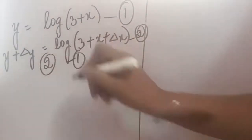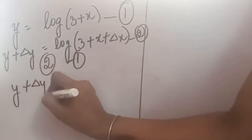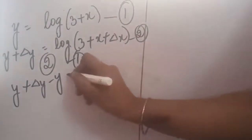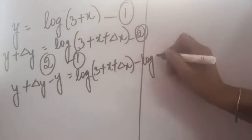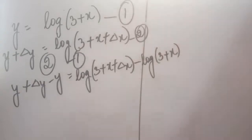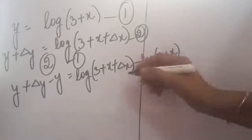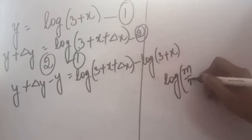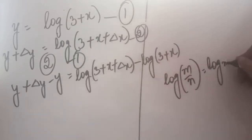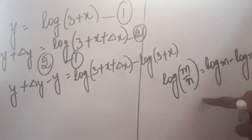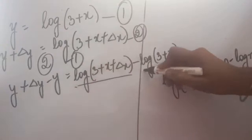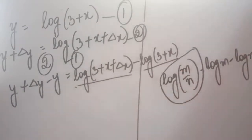The next step is the second equation minus the first equation. So y plus delta y minus y, this will be deducted, and on the right hand side log(3 + x + delta x) minus log(3 + x). So here we can apply one formula of log — as you all know, if there is log(m/n), it can be written as log m minus log n. So here this is log m and this is log n, so we can write log of this divided by this. So this formula can be applied here.